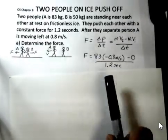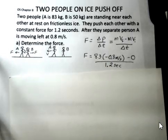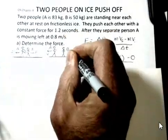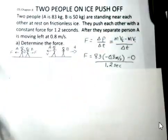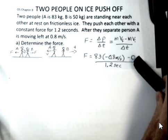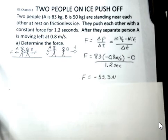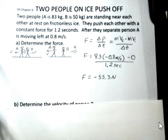83 kilograms for person A, taking to the left to be the negative direction and working this with positive off to the right. Then, the velocity for person A at final is minus 0.8 meters per second. Person A was at rest initially, so the initial momentum is zero. This push was for 1.2 seconds. Use your calculator and verify that you get a force of negative 55.3 newtons, the negative indicating the force on person A is to the left. So, not too complicated.